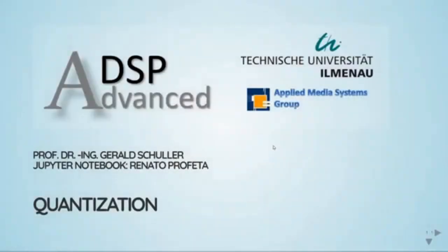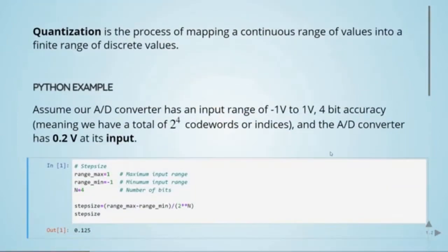Quantization is, together with sampling, a fundamental part in analog-to-digital conversion. Quantization is the process of mapping continuous values into a finite range of discrete values. As an example, assume our analog-to-digital converter has an input range from minus 1 to 1 volt. We are going to use 4-bit accuracy, meaning we have 2 to the power of 4 code words or indices, and we'll see what happens when we have 0.2 volts at the input.